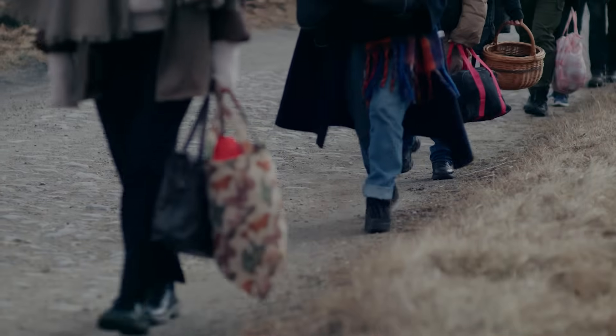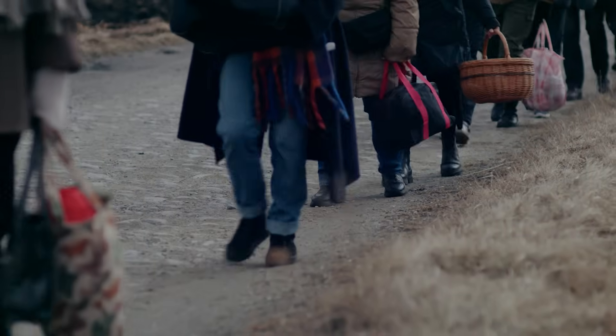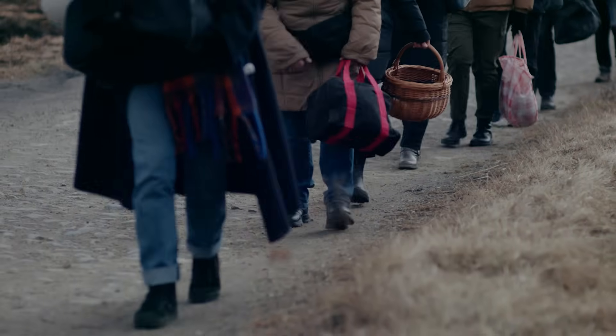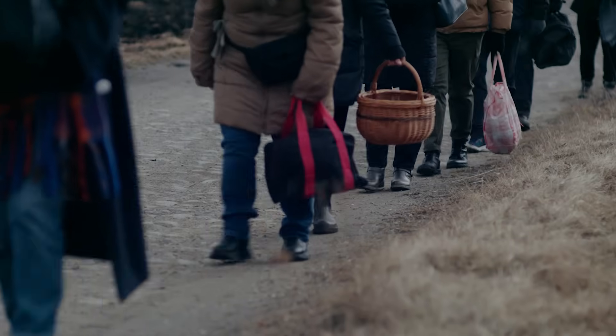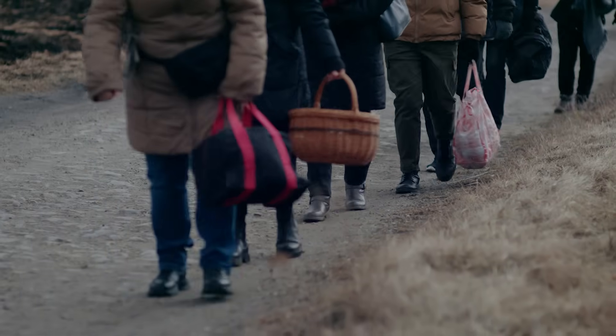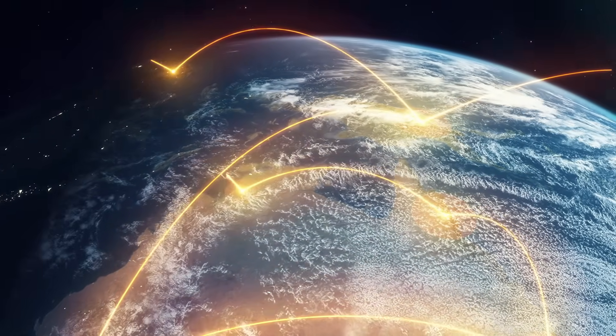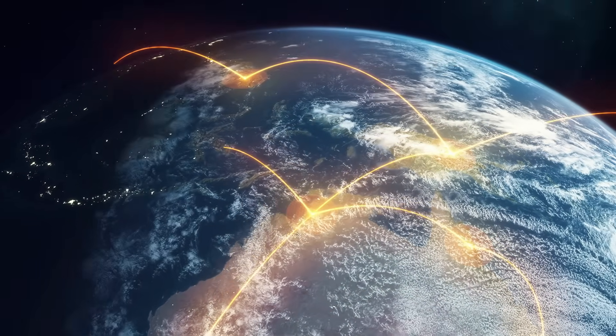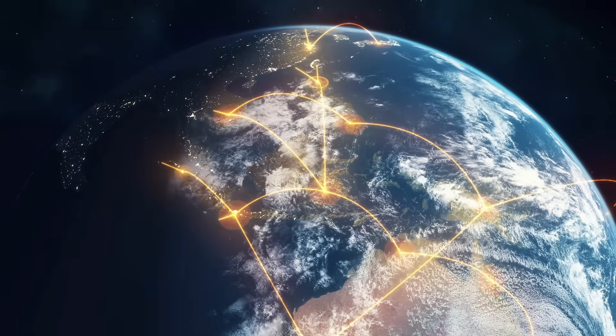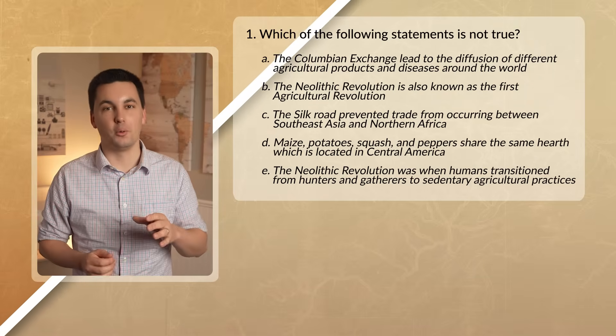And it isn't just trade or business that diffused agricultural crops and practices. The migration of people did as well. Both forced and voluntary migration leads to new goods, services, plants, animals, and ideas to be introduced to different geographic regions around the world. Today, thanks to globalization, we can see that agricultural practices and products diffuse around the world faster than ever before, all of which reshapes our farms, diets, and our grocery stores.